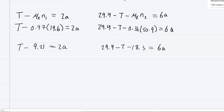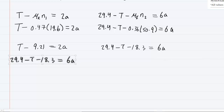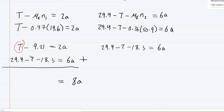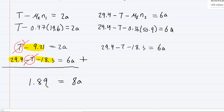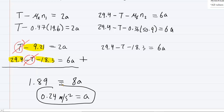To solve this, we add the two equations together. The right side becomes 8a. On the left side, the positive tension and minus tension cancel out, and we combine negative 9.21 and negative 18.3. Adding everything together we get 1.89 equals 8a. Dividing both sides by 8 gives an acceleration of about 0.24 meters per second squared. This is the correct answer for part A.